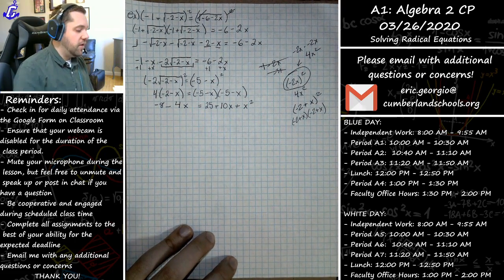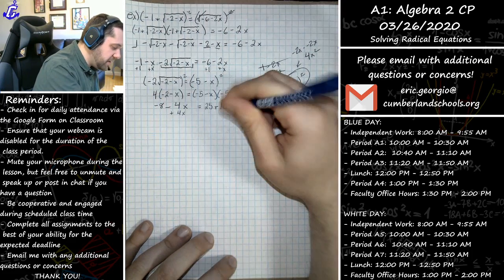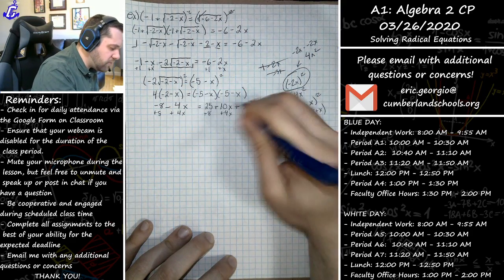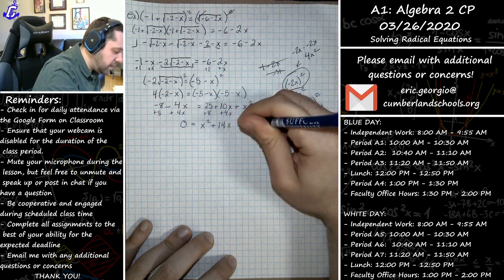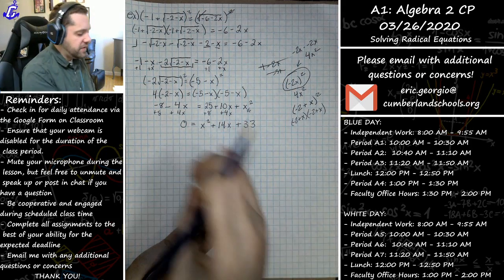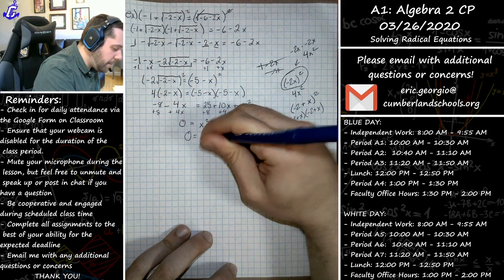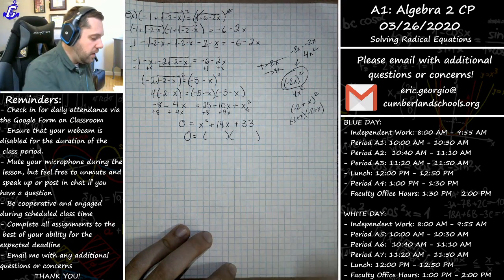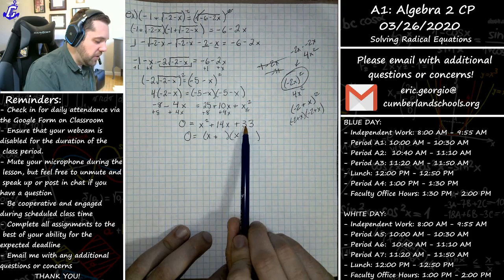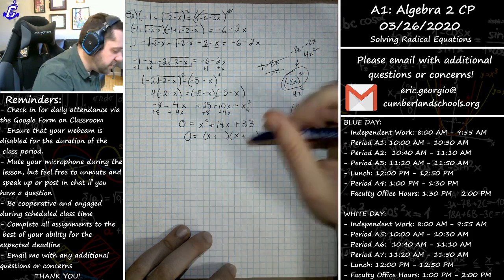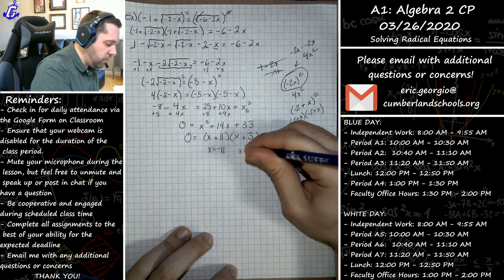We see x squared show up — another indicator that I need to factor. Before we factor, set equal to zero. I'm going to add 4x over to this side and add 8 over to this side, and rearrange the terms into a nice factoring order: 0 equals x squared plus 14x plus 33. Now I can factor. I need x and x to make x squared. Everything's positive so no need for negatives. I'm looking for factors of 33 that combine to give 14 in the middle — that's 11 and 3. So I end up with two potential solutions: x equals negative 11 and x equals negative 3.